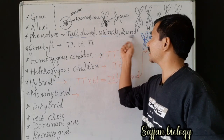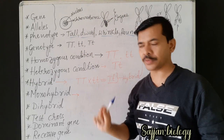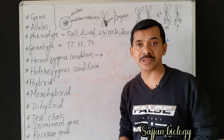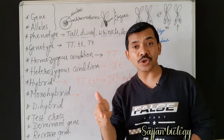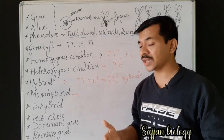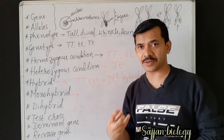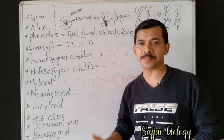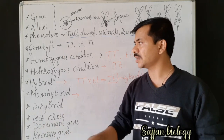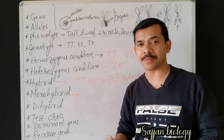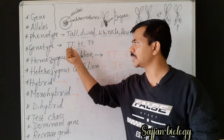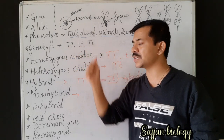Genotype refers to the genetical constitution of an organism — what is present inside the organism's body. Genotype does not express itself externally; the characters are considered within the body of an organism. We express genotype using symbols.